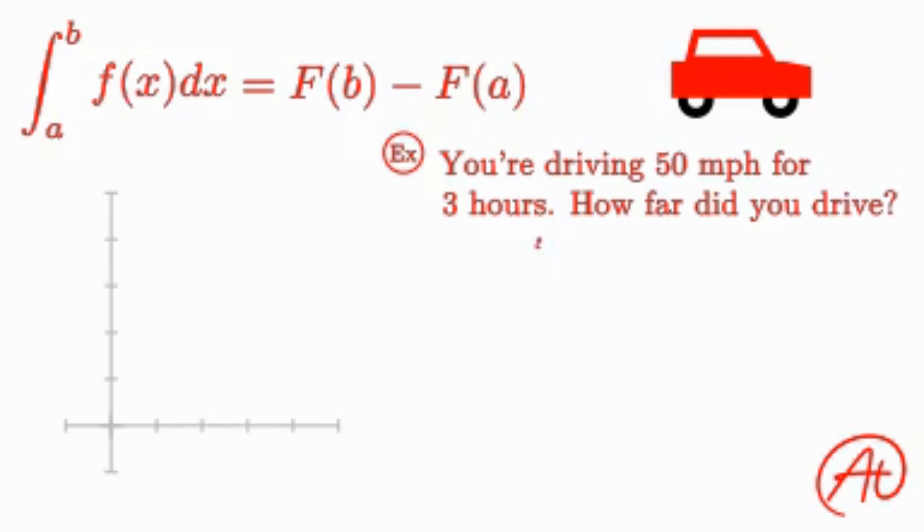Since your speed, 50 miles per hour, is the derivative of position, or rather, your position is the antiderivative of your speed, we can find our answer by taking the integral from hour 0 to hour 3 of 50 miles per hour dx. Visually, we have a constant speed of 50 miles per hour and want to find the area under the curve from 0 to 3.